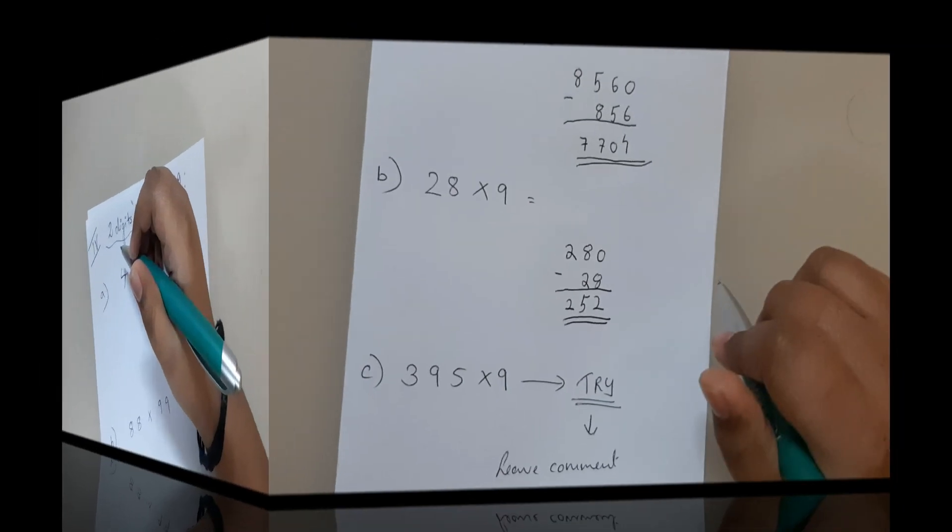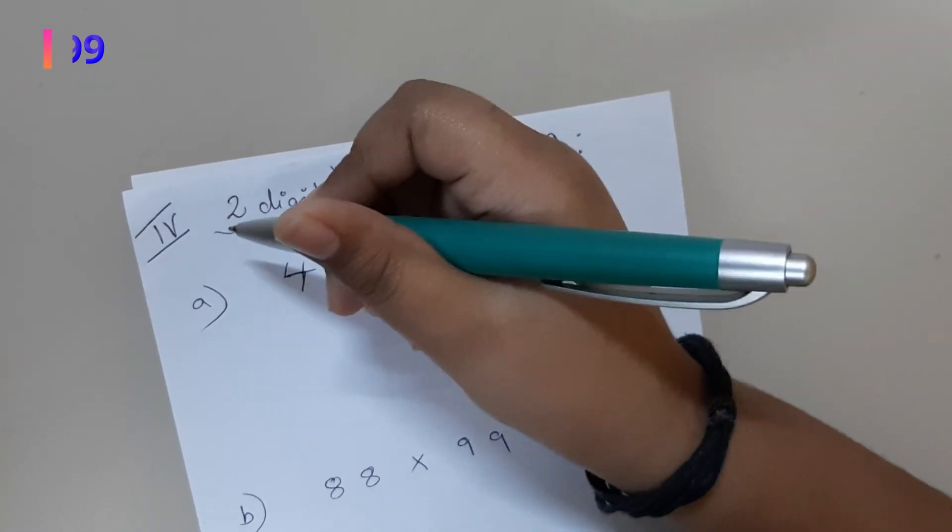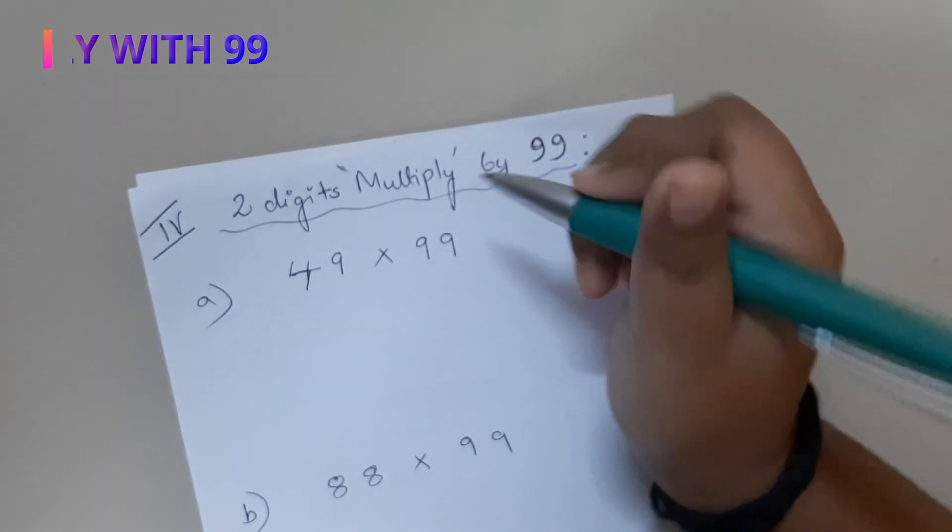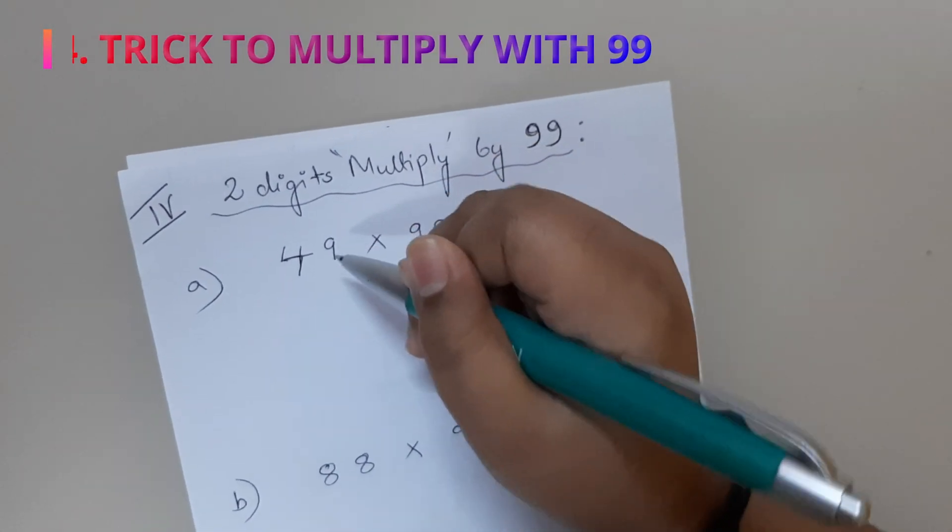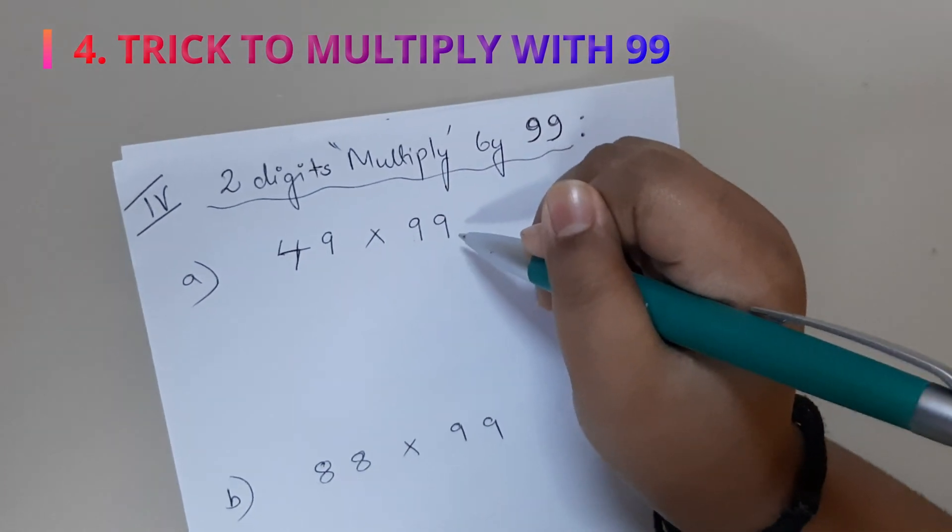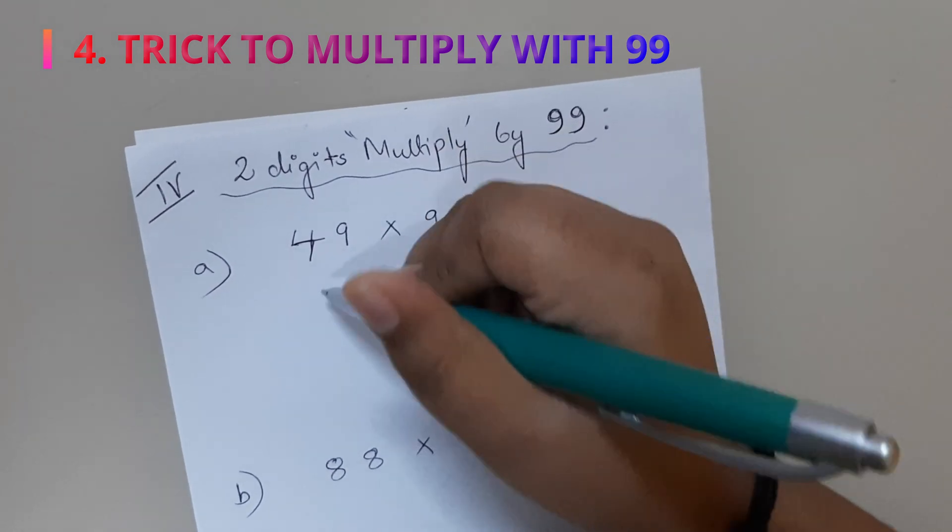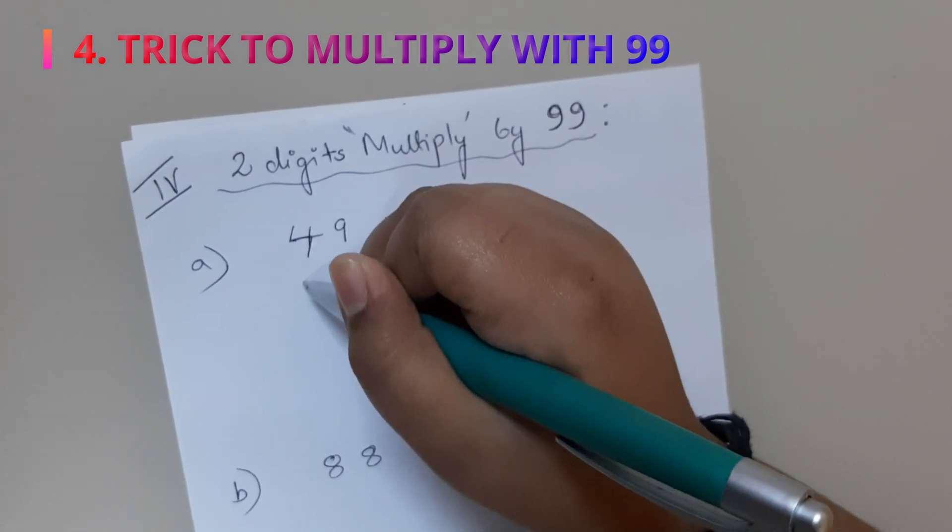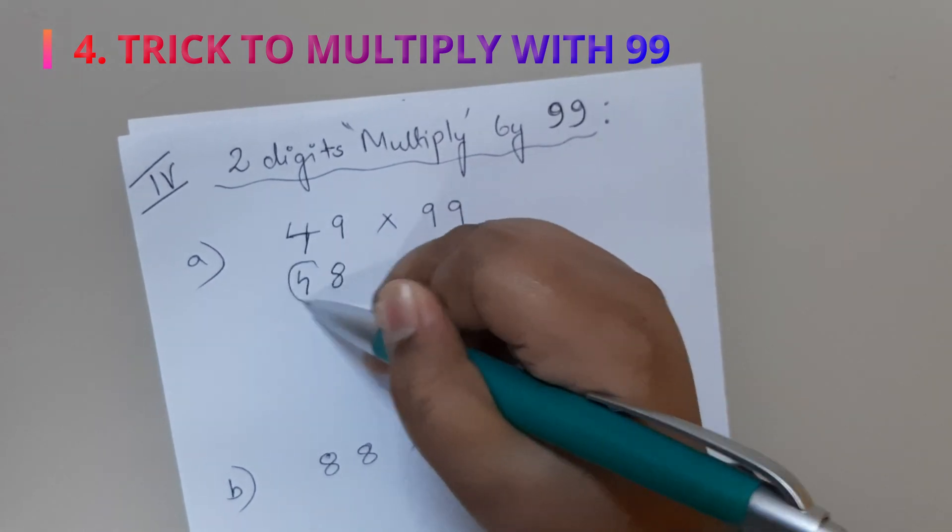So the fourth trick is how to multiply a two-digit number by 9. First sum is 49×9. We have to take one number lesser, that is 48. Now we have to subtract this number.